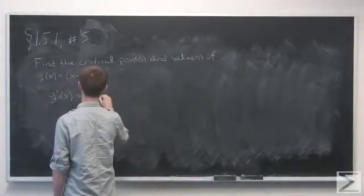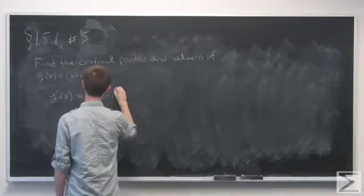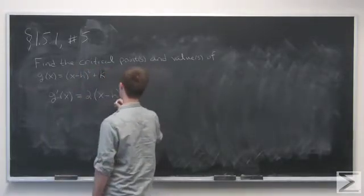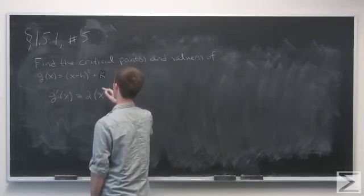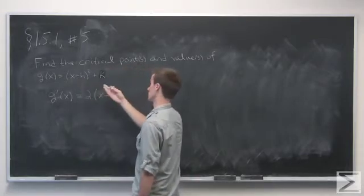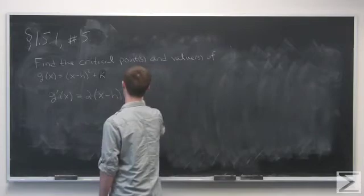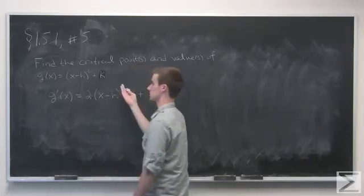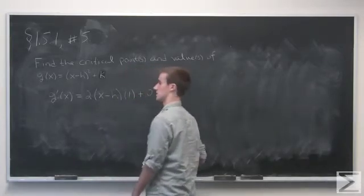So we have 2 times (x - h), and we bring down the power, and we multiply by the derivative of the inside which is just 1, and plus the derivative of any constant is just 0.